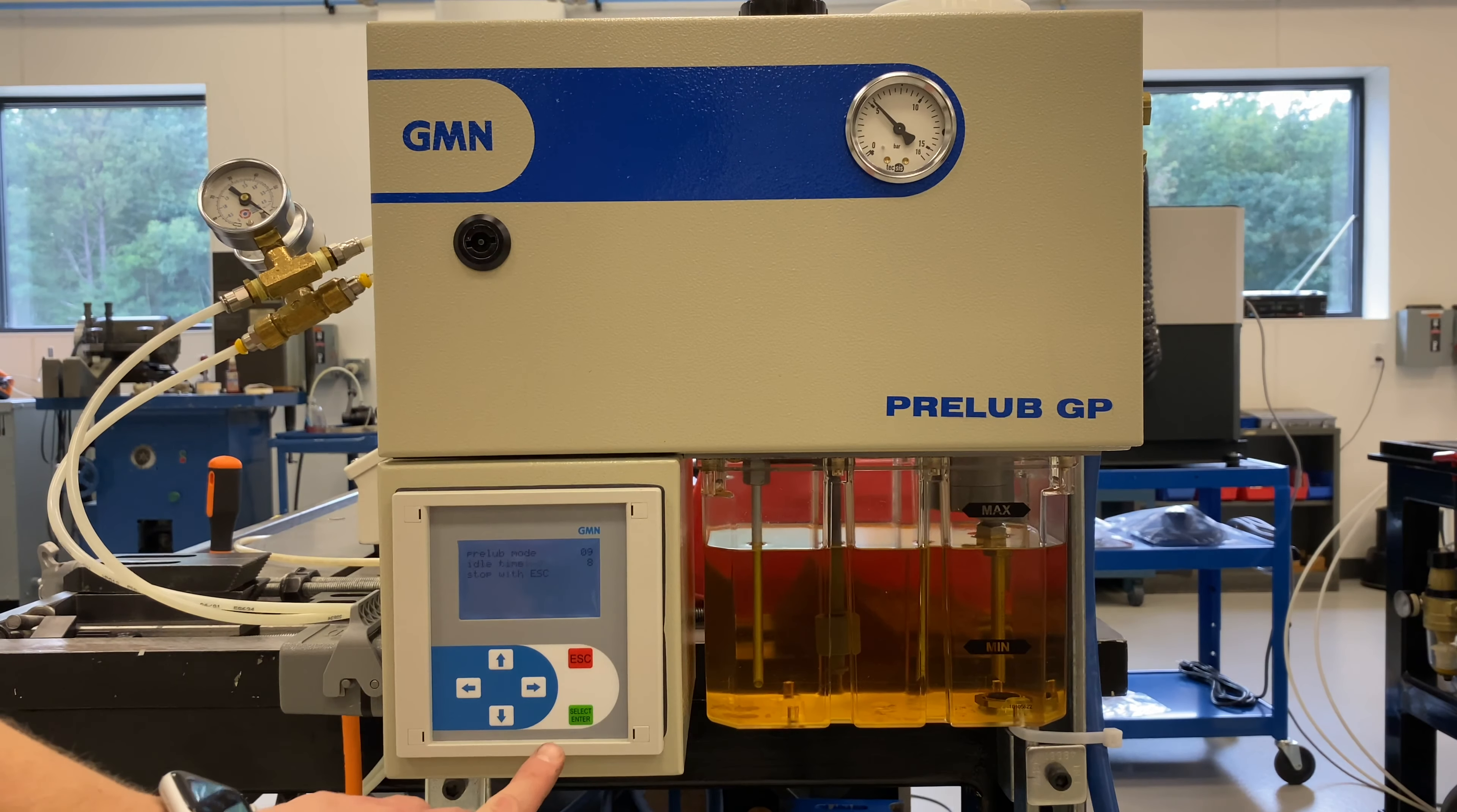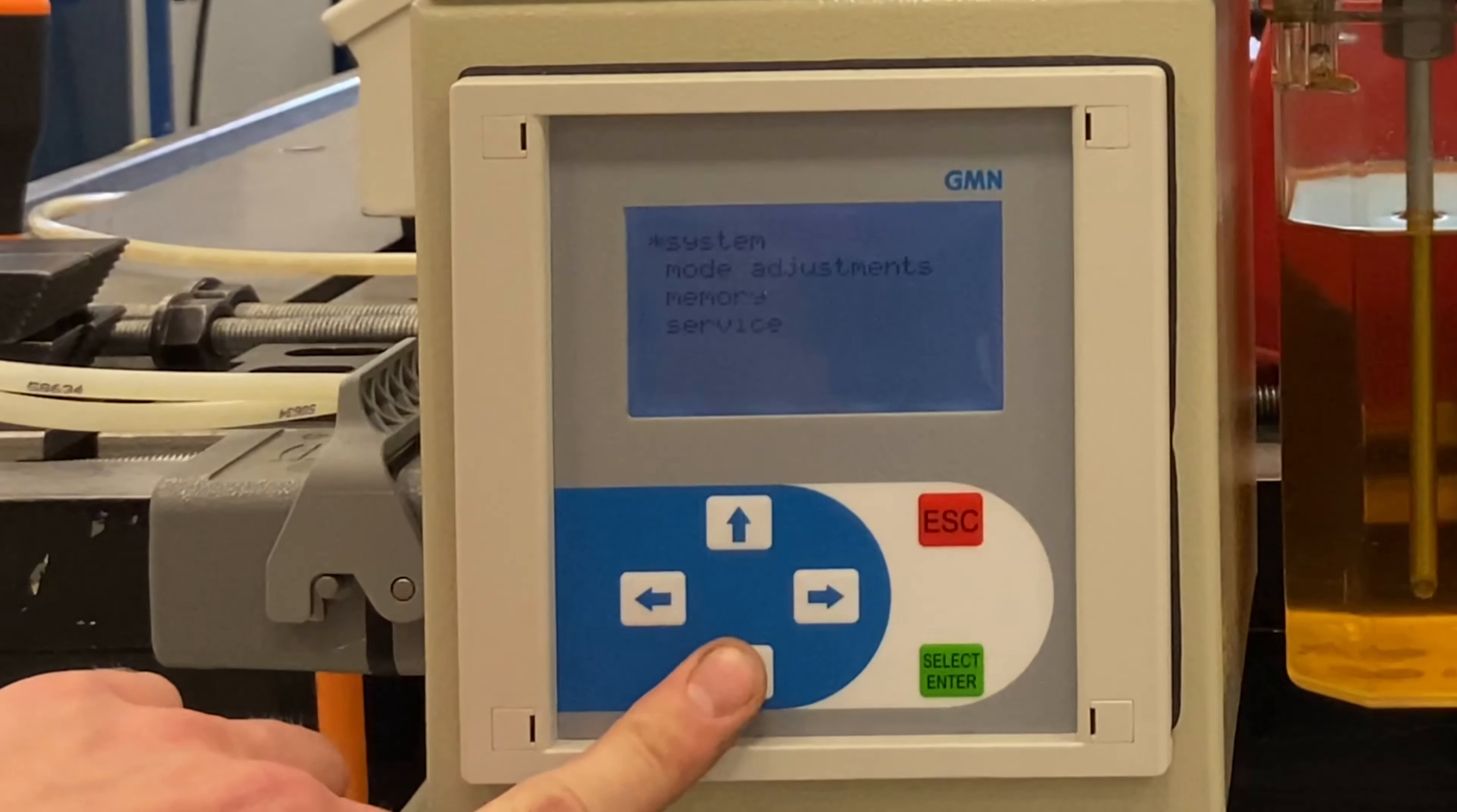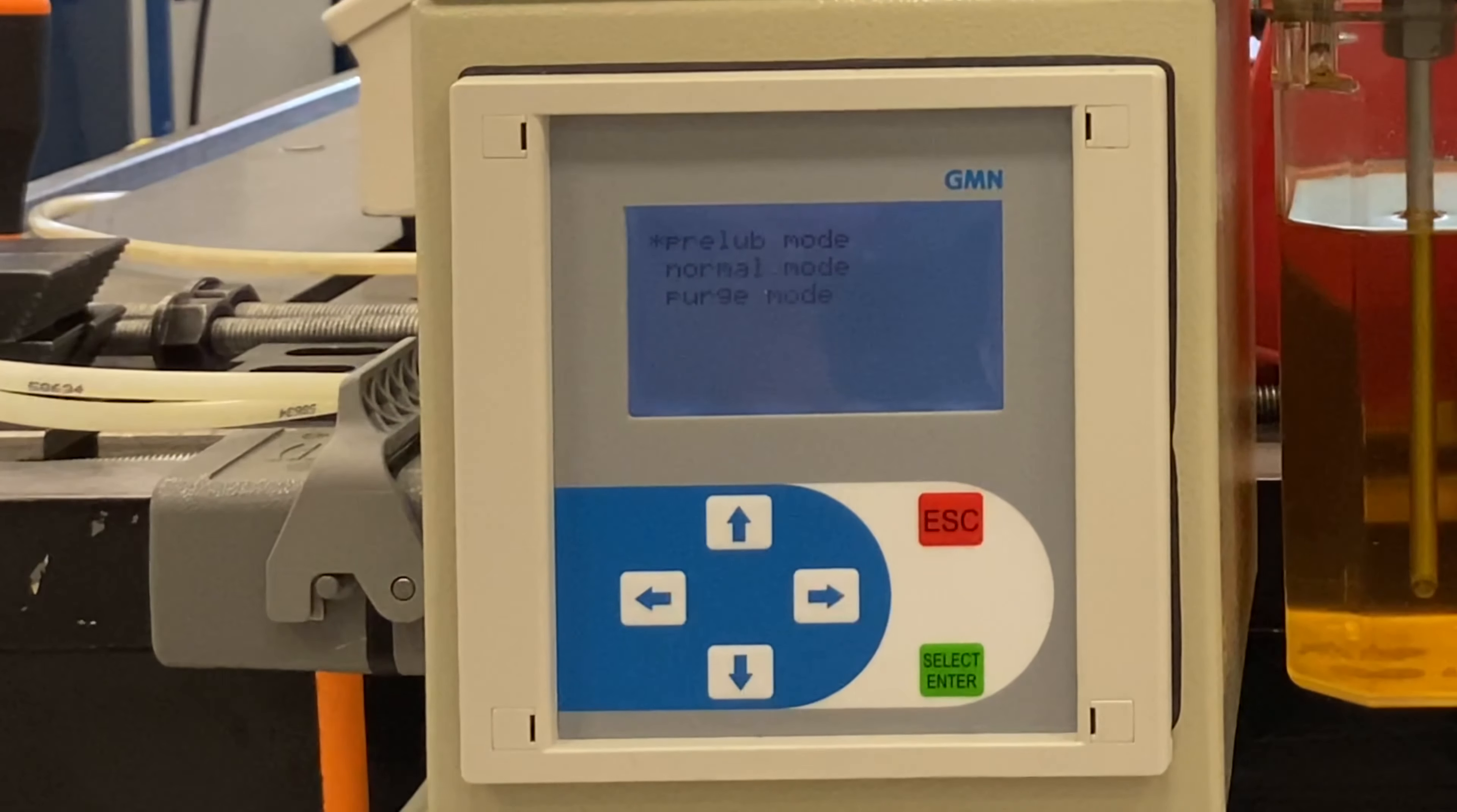Turn the unit on. Hit enter. Go to mode adjustments. Pre-lube mode is factory set and shouldn't require any adjustments.